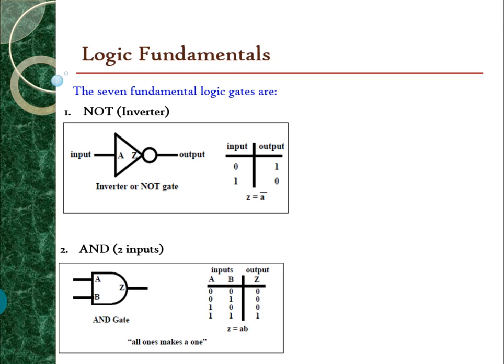The second fundamental logic is the AND gate. In this example, it is a two-input gate. In an AND gate, the state of the output is decided by the inputs — both inputs have to be true for the output to be true.